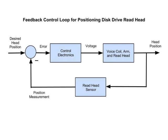The difference between the desired head position and the position of the read head is the error. The error signal is what the control electronics act upon to produce a voltage, and this voltage goes to the voice coil, resulting in a torque on the arm, causing the arm to rotate and to move the read head.